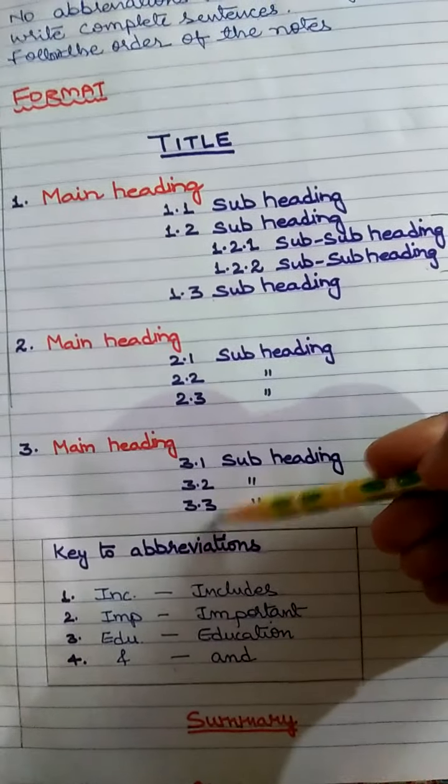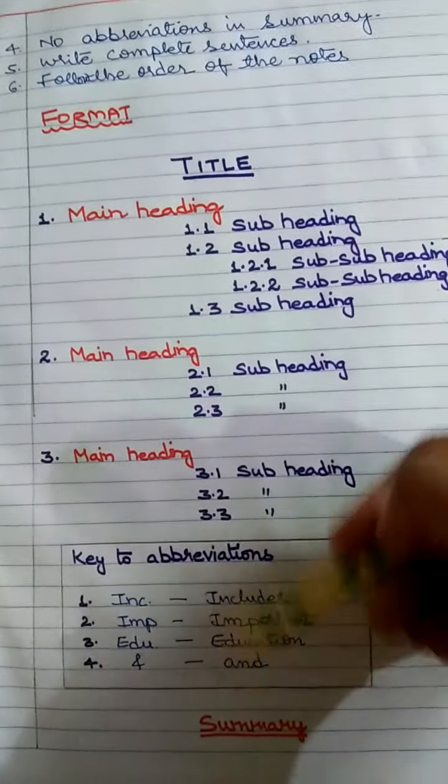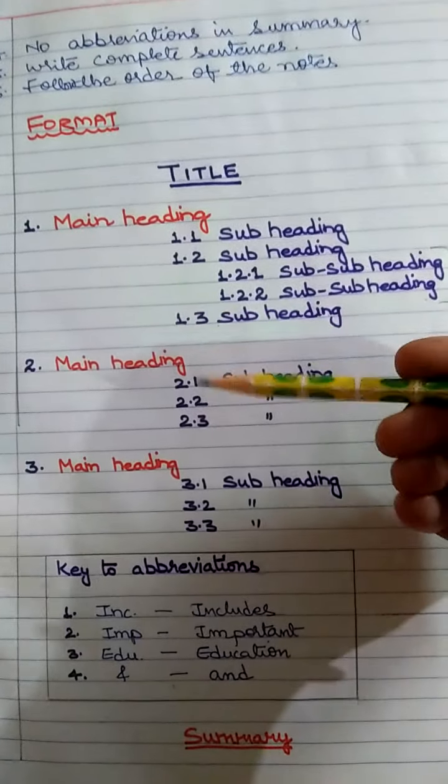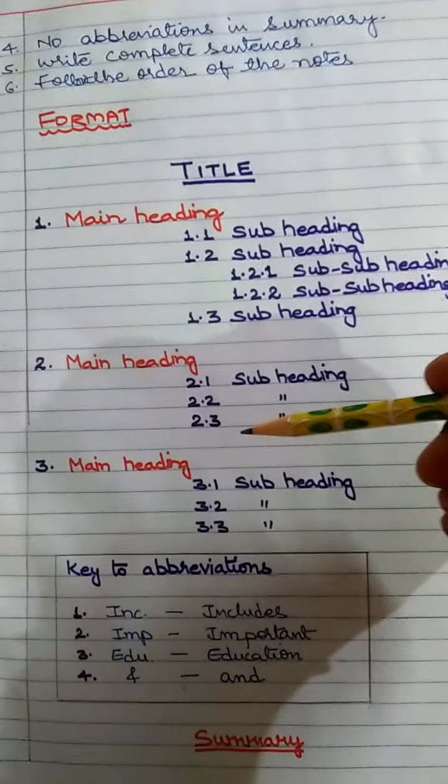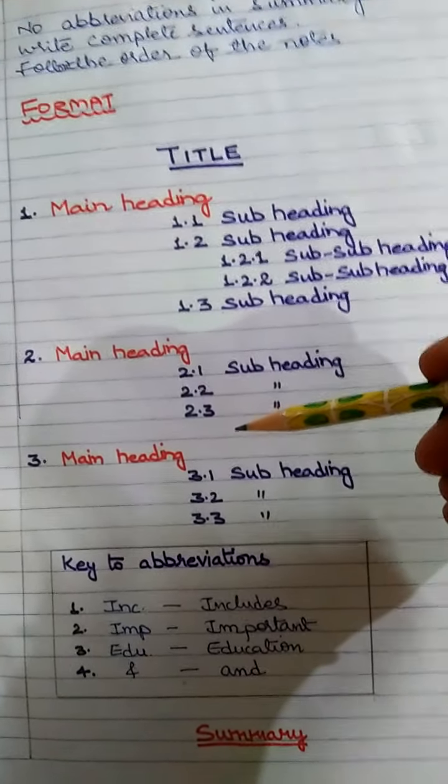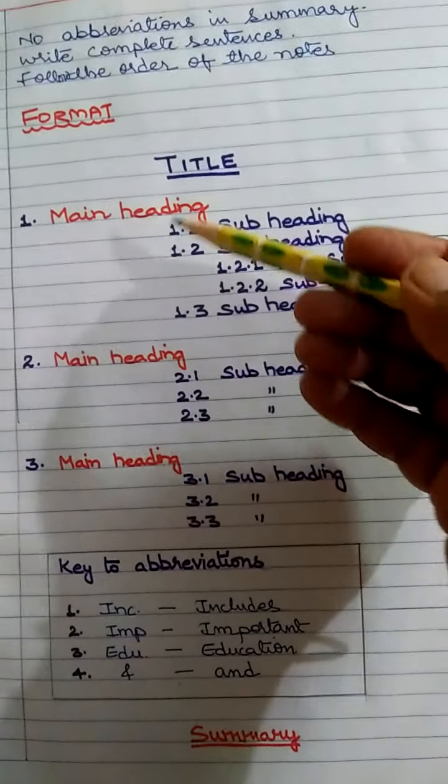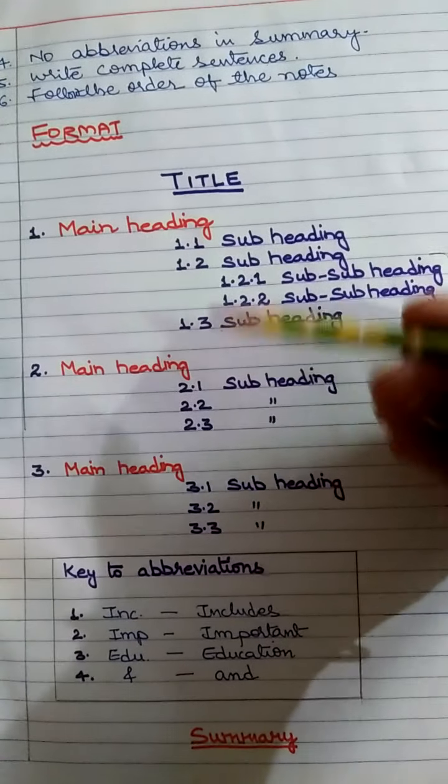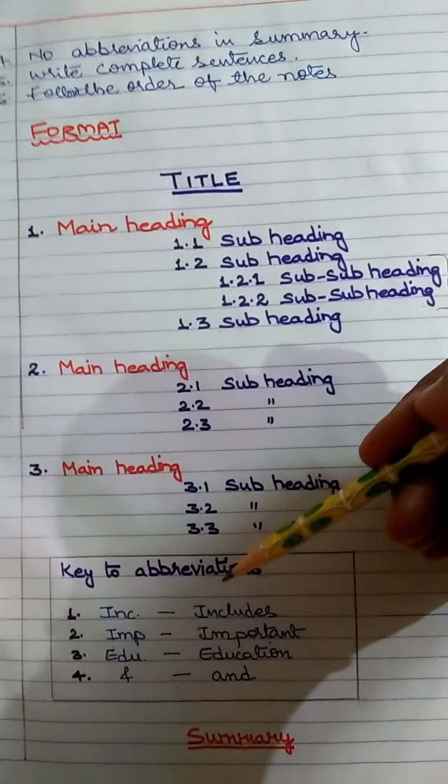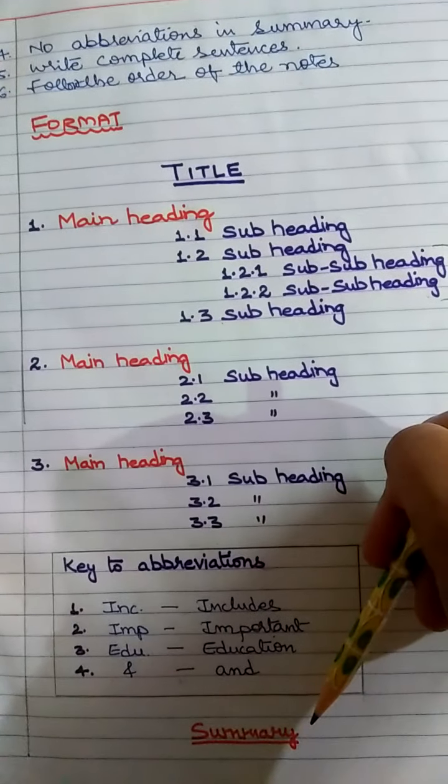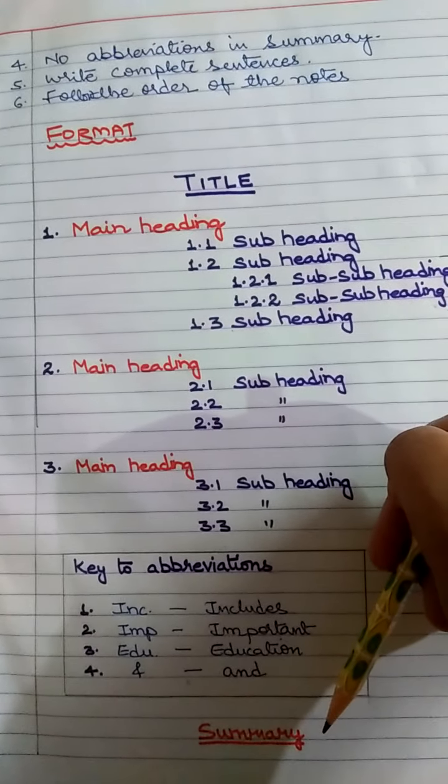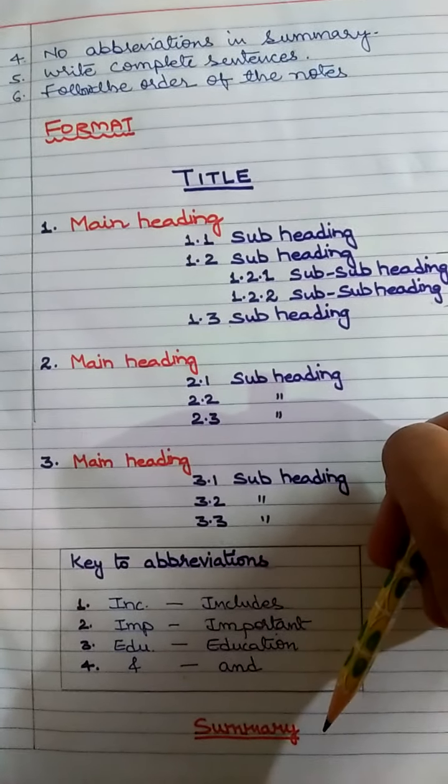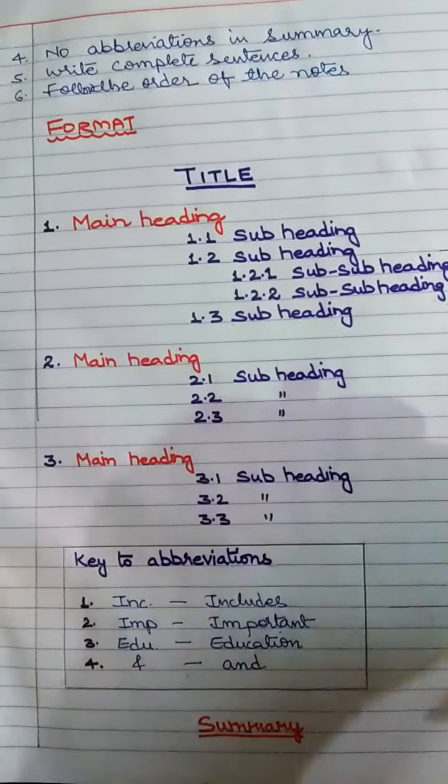So your summary has to go in systematic order. Avoid copying the passage from the question paper. There you will lose marks. You need to write summary of the note-making what you have prepared over here. Systematic way you go and then write summary. So here I hope you understood it well. Thank you. God bless you.